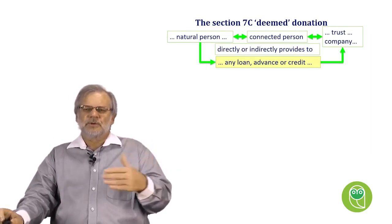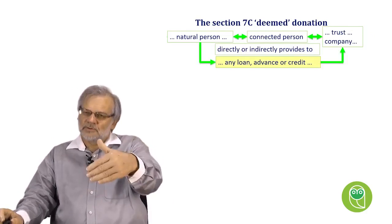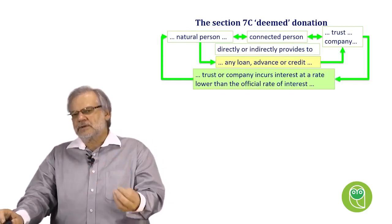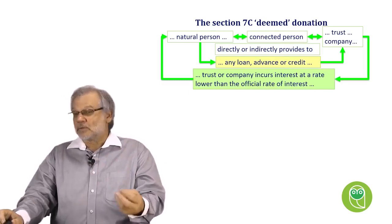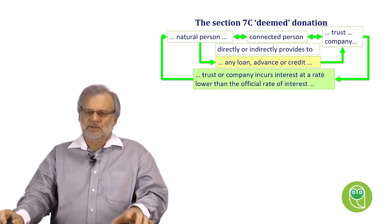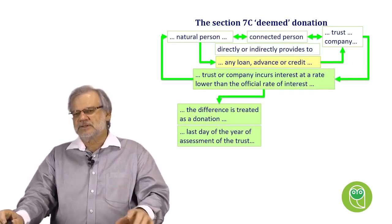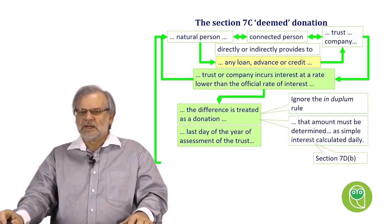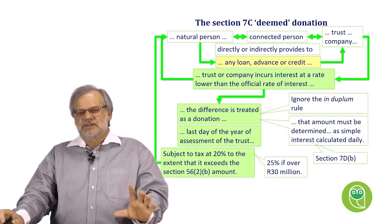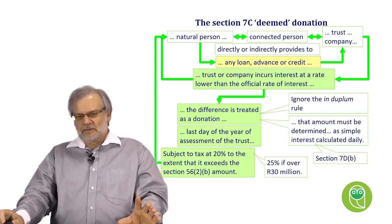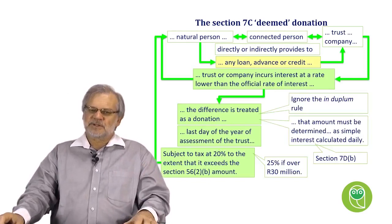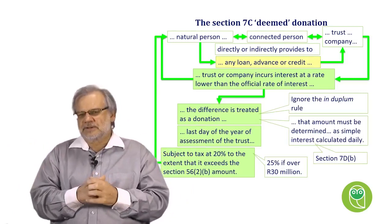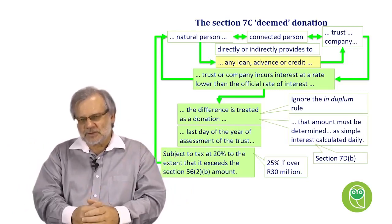Indirectly can also be where you cause a company to make the loan, then 7C would also apply. And the trust or company then incurs interest at a rate lower than the official rate of interest. The difference is then treated as a donation on the last day of the year of assessment of the trust, subject to 20% tax, to the extent that it exceeds the Section 56(2)(b) amount. And where you've cumulatively exceeded 30 million, it will then be subject to 25%.